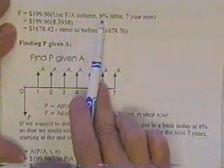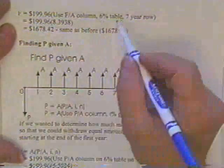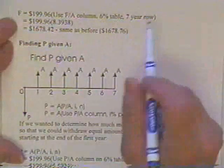We do that by multiplying $199.96. We use the F over A column, the 6% table. That's correct this time, seven year row.